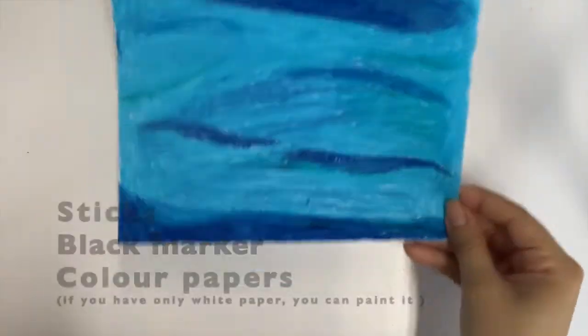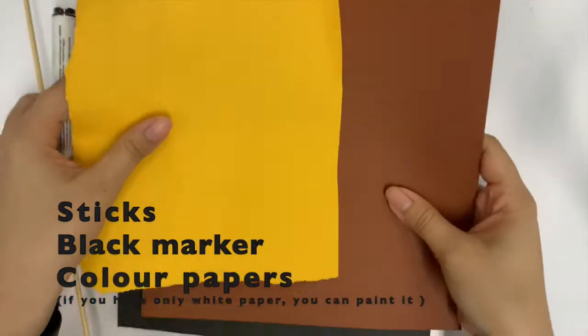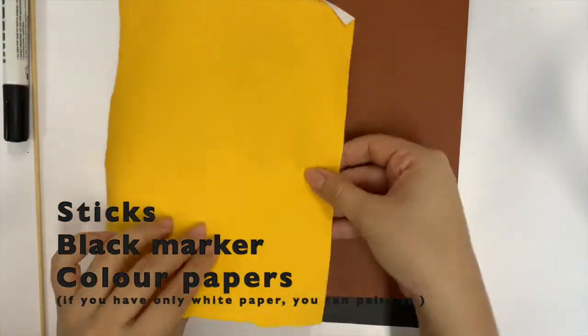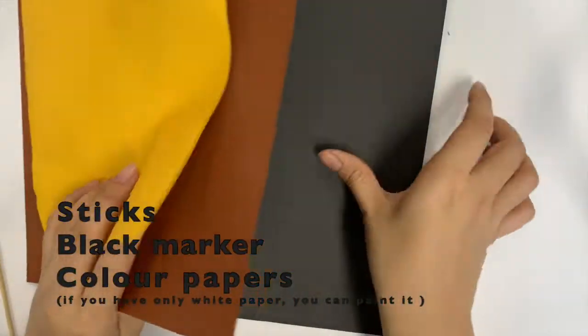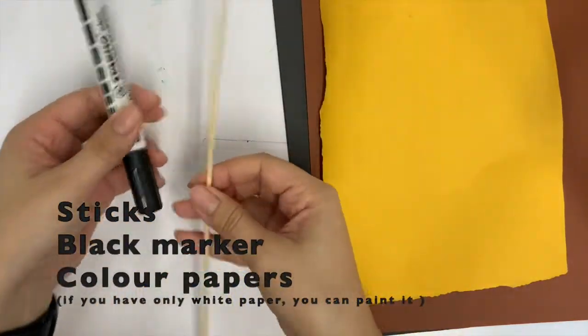For the next step we need colored paper, but if you don't have it you can use white paper and paint it any color you want. Then we need a black marker and some sticks.